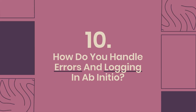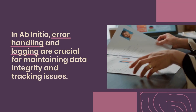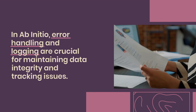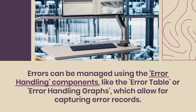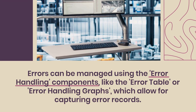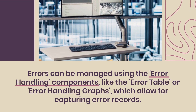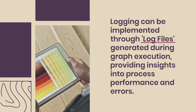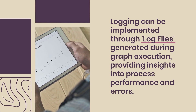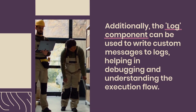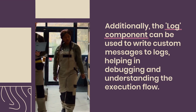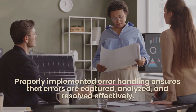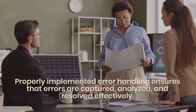Question 10: How do you handle errors and logging in AbInitio? Error handling and logging are crucial for maintaining data integrity and tracking issues. Errors can be managed using error handling components like the error table or error handling graphs, which allow for capturing error records. Logging can be implemented through log files generated during graph execution, providing insights into process performance and errors. Additionally, the log component can be used to write custom messages to logs, helping in debugging and understanding the execution flow. Properly implemented error handling ensures that errors are captured, analyzed, and resolved effectively.